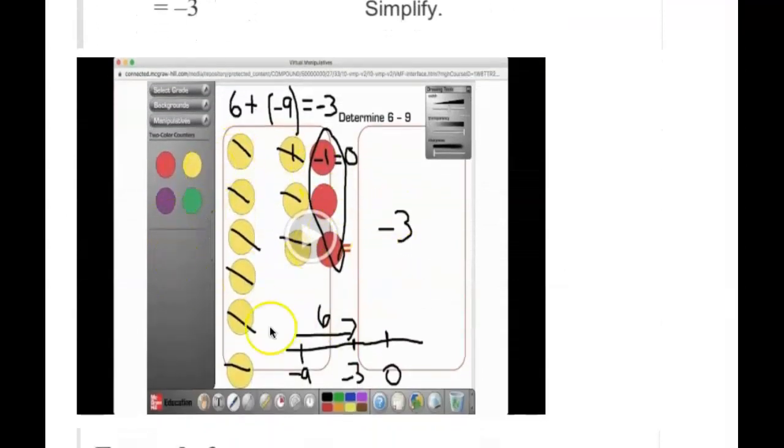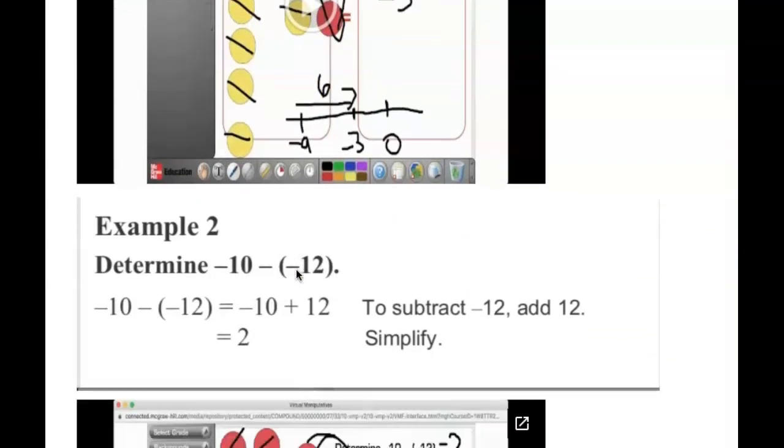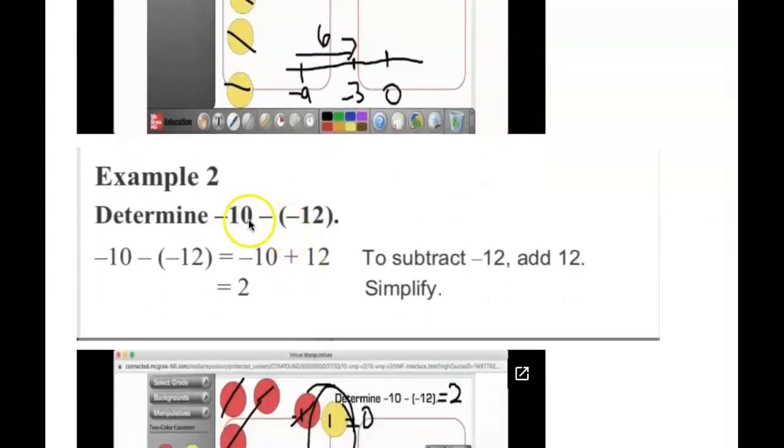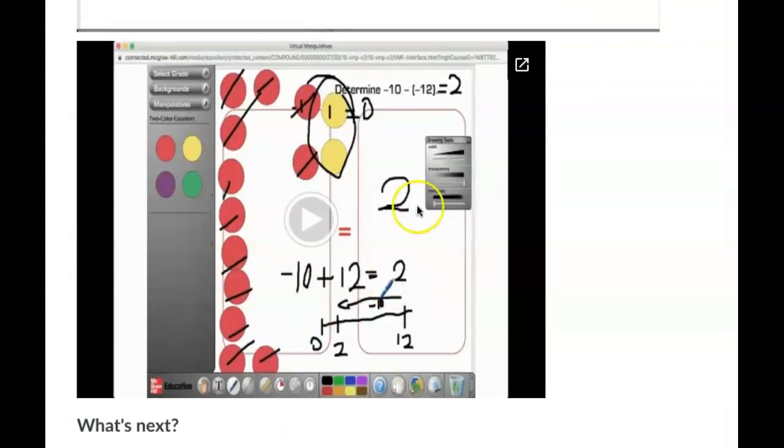This video will show you what that looks like using counters, so please watch that. Another example: if you were to subtract -12 from -10, you're going to change that to adding the opposite. The opposite of -12 is positive 12. So -10 - (-12), if you subtract a negative it becomes a positive. So 12 having a greater absolute value, the answer will be positive. 12 - 10 is 2. Please watch this video to show what that looks like as counters.